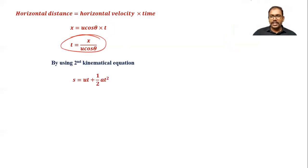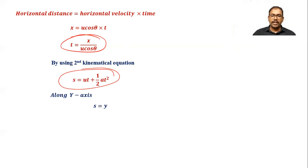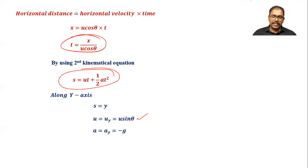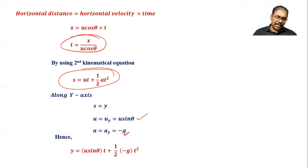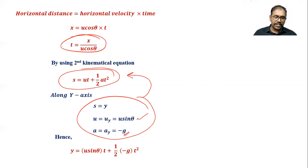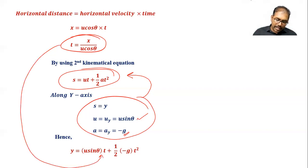By the second kinematical equation, s equals ut plus half a t squared. Writing this along the y-axis: displacement s becomes y, initial velocity u becomes u_y or u sin theta, and acceleration a_y is minus g since gravity always acts downward. So the equation becomes: y equals u sin theta times t plus one-half times (minus g) times t squared.